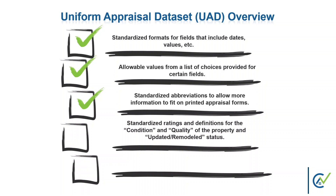The appraiser must describe the subject property as of the effective date of the appraisal on an absolute basis, meaning the property must be rated on its own merits. The rating should not be selected on a relative basis — meaning it is not selected based on how the property relates or compares to other properties in the neighborhood. Additionally, the condition and quality ratings for comparable properties must also be made on an absolute basis, each on its own merits, and must reflect the property as of the date of sale of that comparable property.